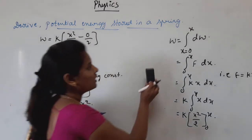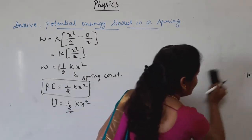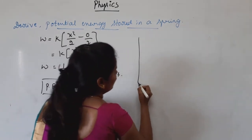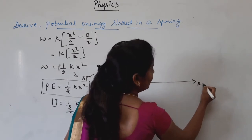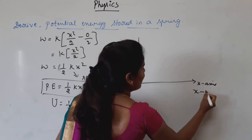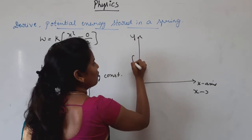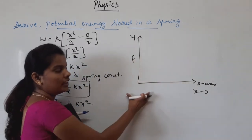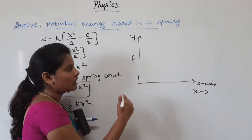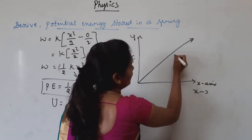Now we have to find the graphical representation of the potential energy of a spring. Along the X-axis we take distance X, and along the Y-axis we take force F. When force is applied, the spring gets displaced, and the product of these two gives the work done. This gives a linear curve.